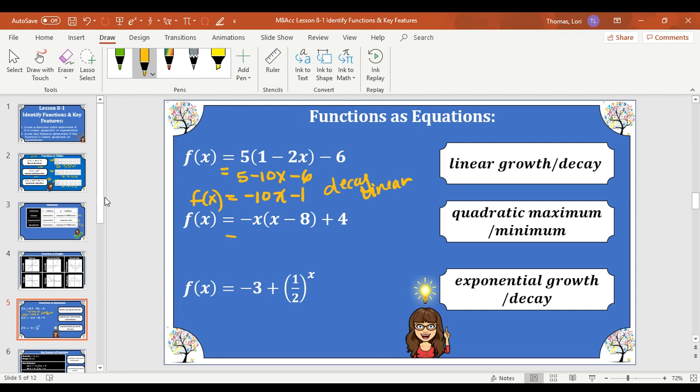Let's distribute our negative x. So we're going to get negative x squared plus 8x plus 4. That is in standard form. We can see that it's quadratic. And our quadratic turns down. So our vertex would be a maximum.